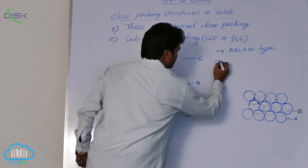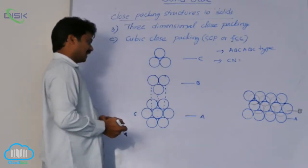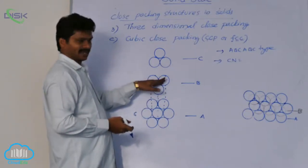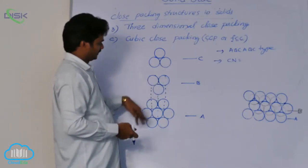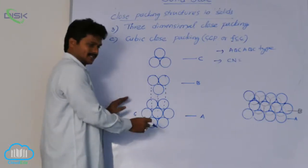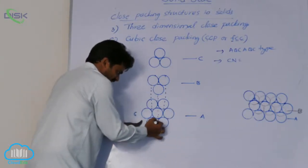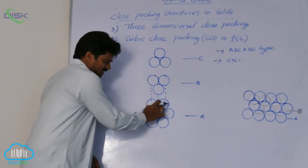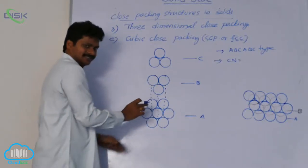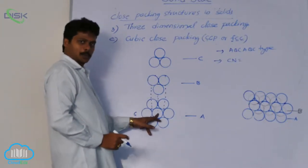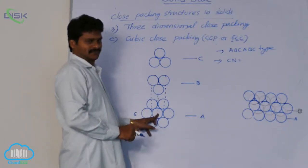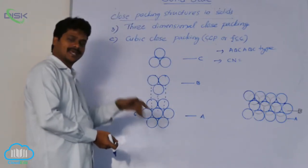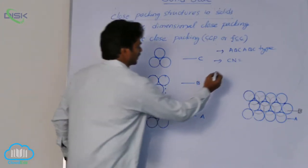What is the coordination number in CCP? Here also this is layer one, this is the second layer, and this is the third layer. Each sphere is in contact with six spheres from the same layer — consider this sphere, it is in contact with six spheres. So from the same layer, coordination number is six. From its above layer, three. And from its below layer also, three. So total coordination number is 12.